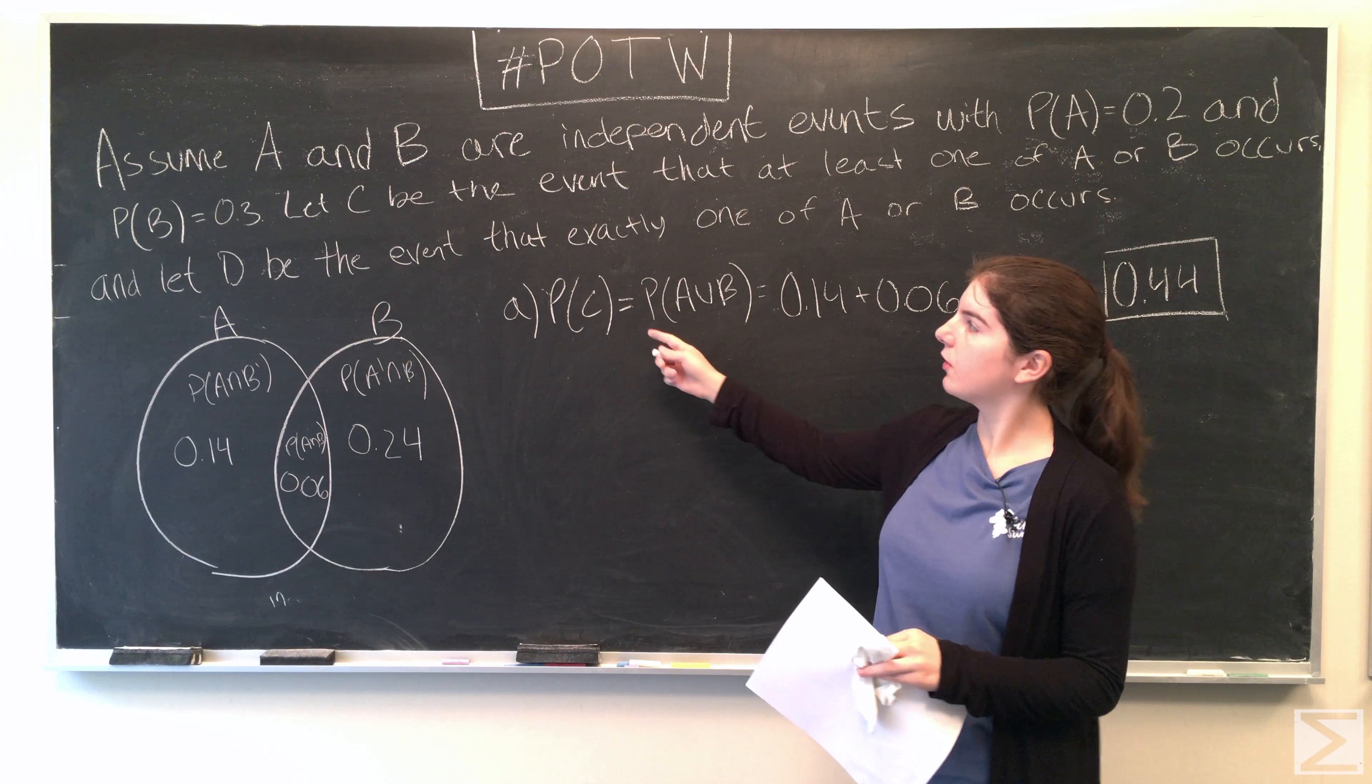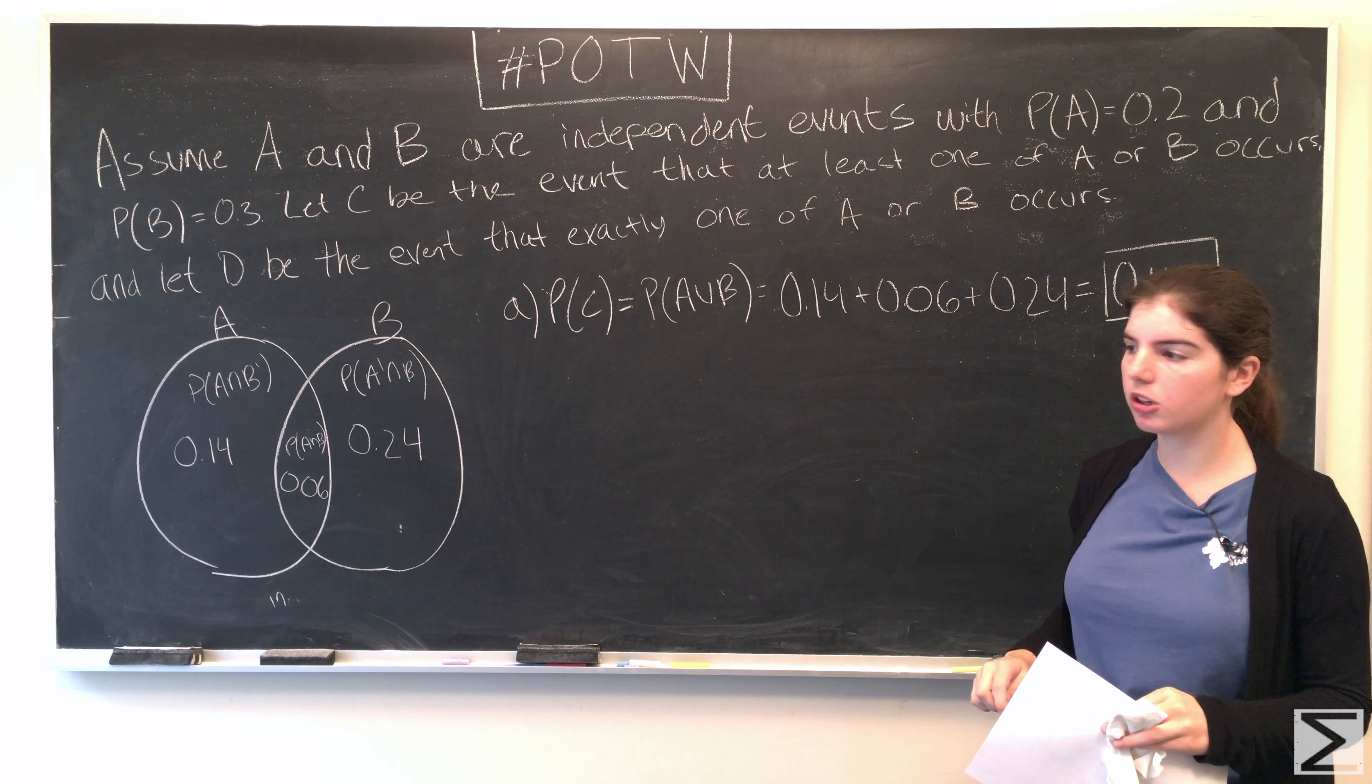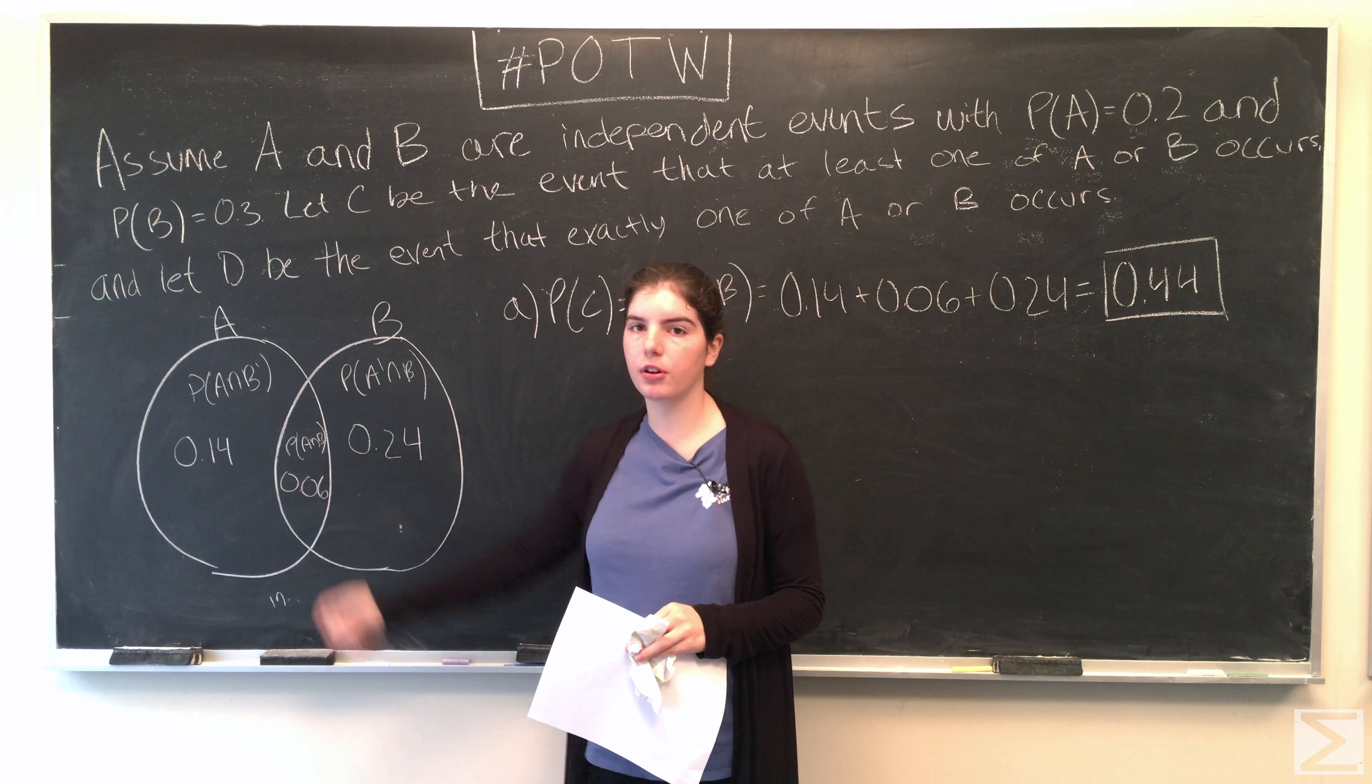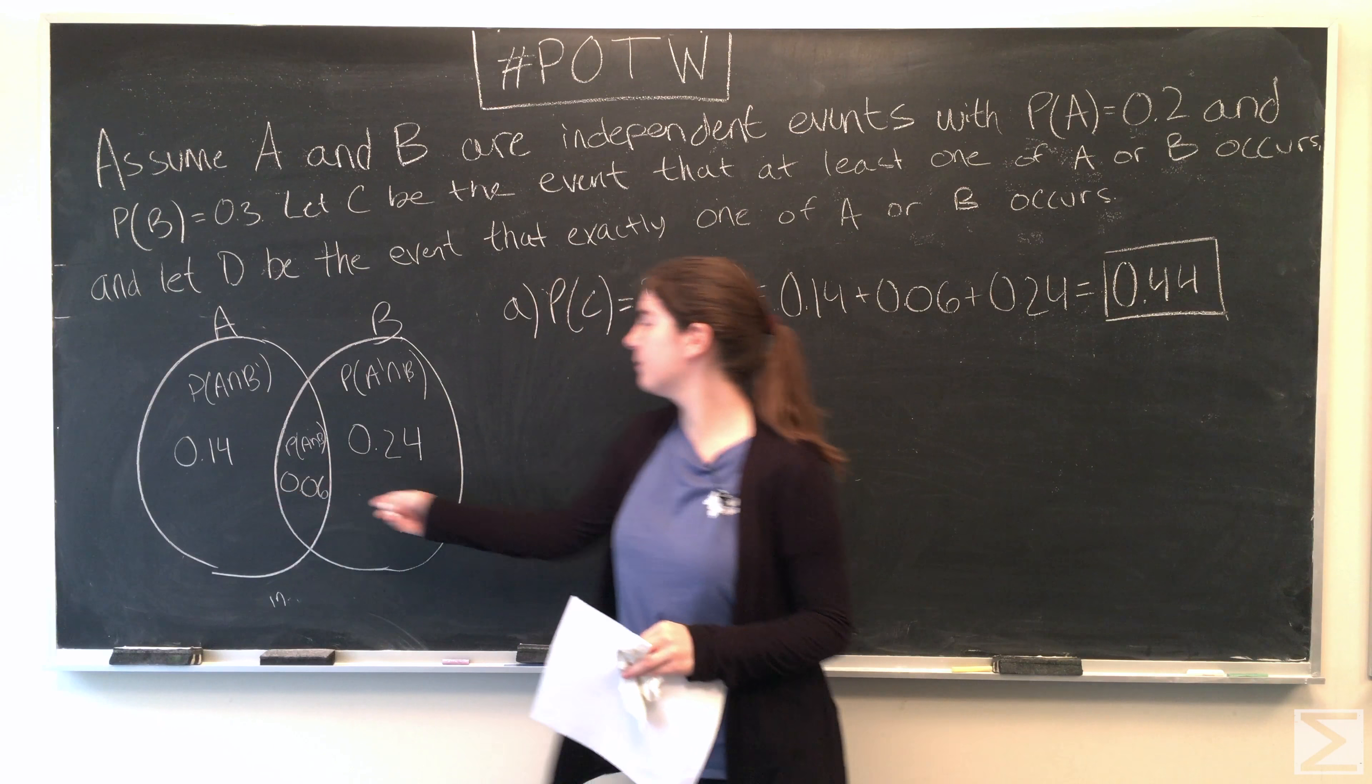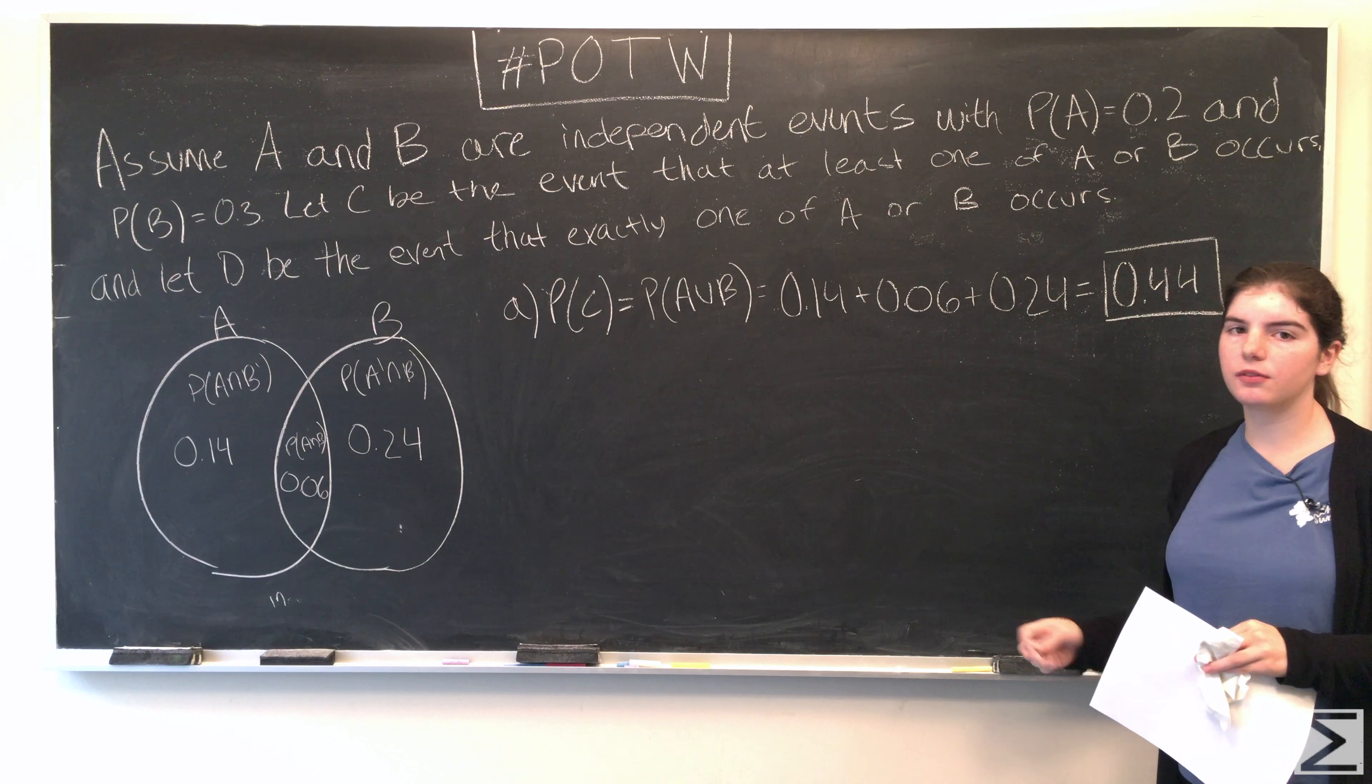So the probability of C. C is the event that at least one A or B occurs, so it can just be A, just be B, or that they both occur. So we just add these up and we get 0.44, and now we'll find the probability of D.